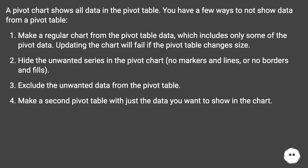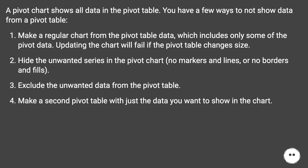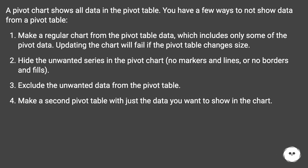A pivot chart shows all data in the pivot table, but you have a few ways to work around this: make a regular chart from the pivot table data including only some of the pivot data (though updating the chart will fail if the pivot table changes size); hide the unwanted series in the pivot chart using no markers and lines, or no borders and fills; or exclude the unwanted data from the pivot table and make a second pivot table with just the data you want to show in the chart.